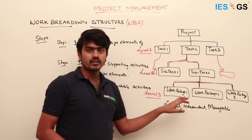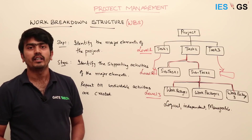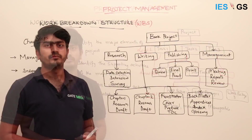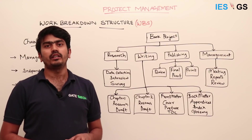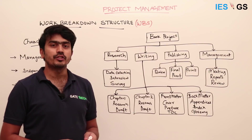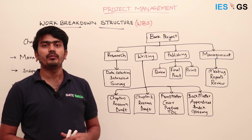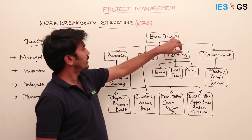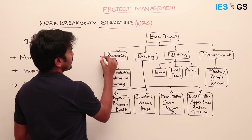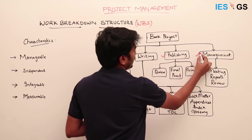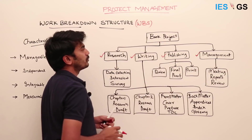Let us see an example — the book project — and how work breakdown structure is used to find out the activities involved. In the picture, the book project is at the top and consists of major elements: Research, Writing, Publishing, and Management. These are the major elements to be addressed under a book project, whose objective is planning, writing, and publishing a book.